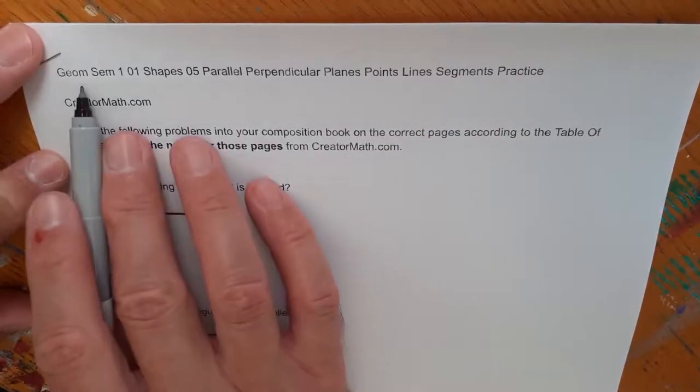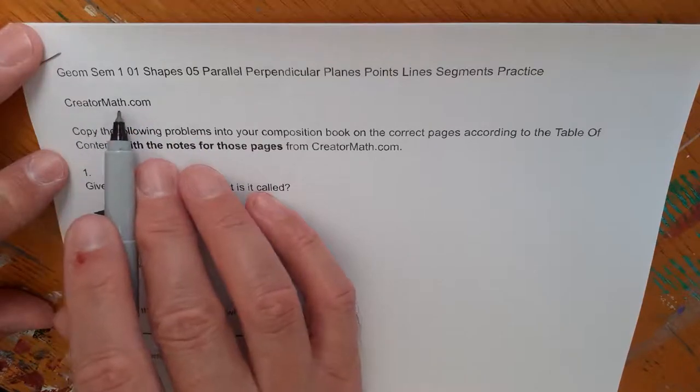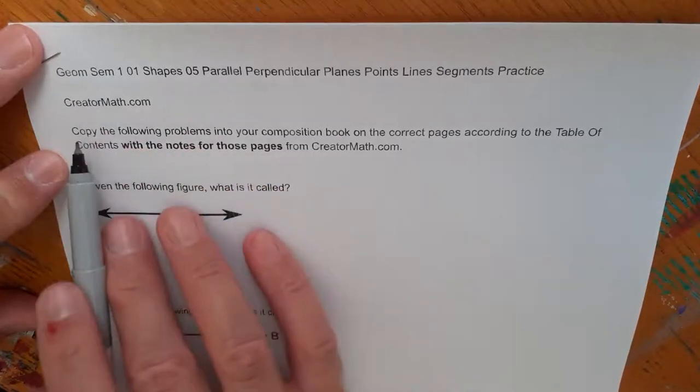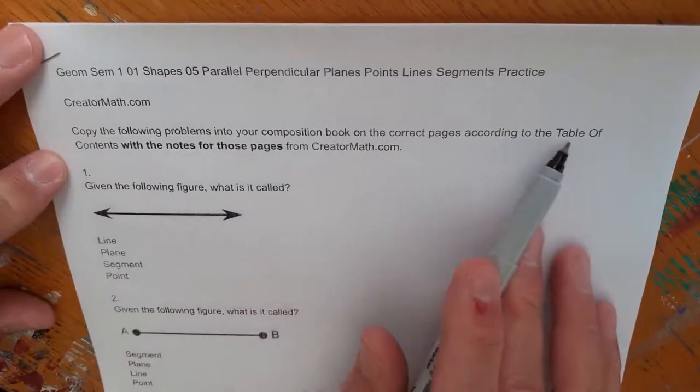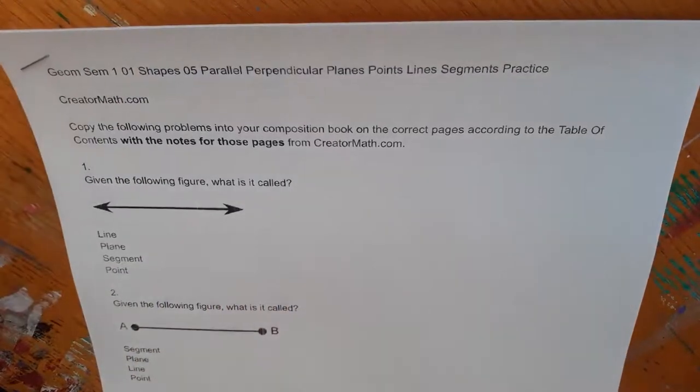It's on creatormath.com under the Geometry tab. You might have to type into Google creatormath.weebly.com to find the website. Copy the following problems into your composition book on the correct pages according to the table of contents with the notes for those pages from creatormath.com.